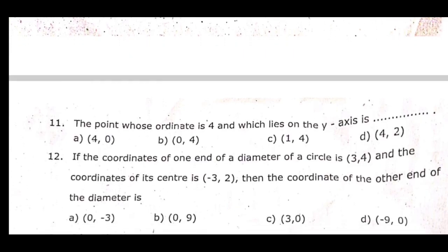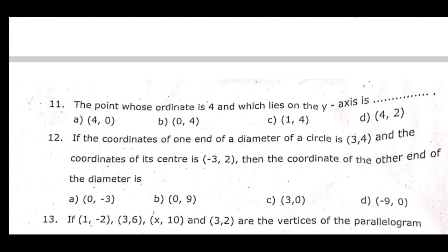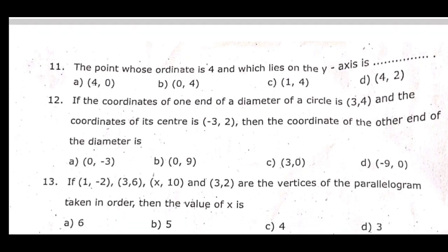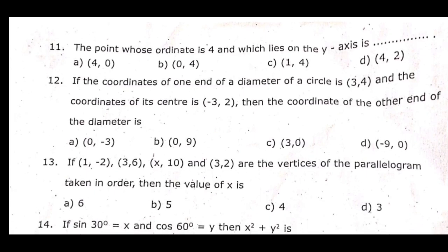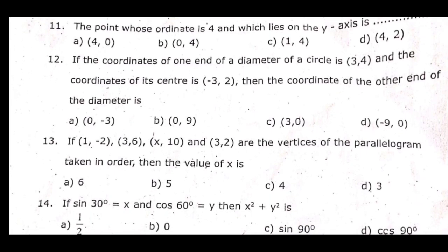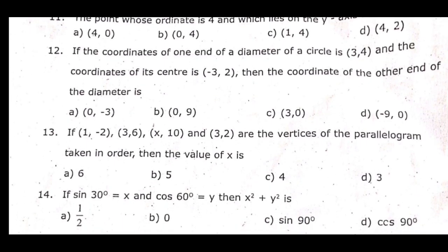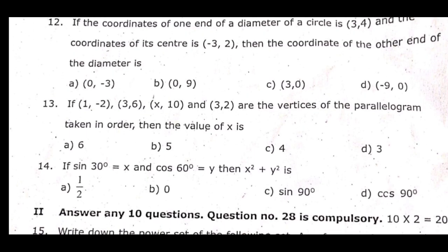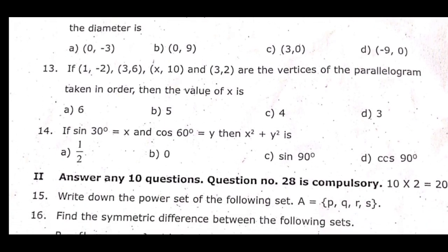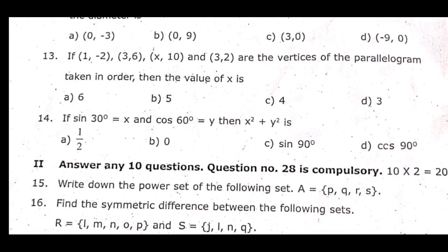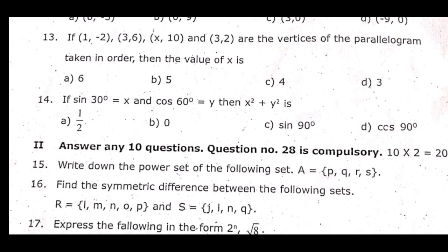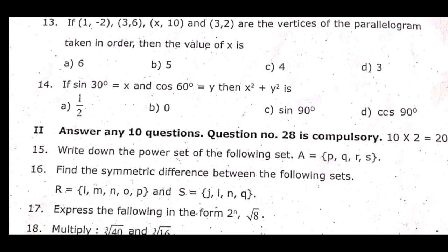Eleventh one: The point whose ordinate is 4 and which lies on the y-axis is dash. Twelfth one: If the coordinates of one end of a diameter of a circle is (3, 4) and the coordinates of its center is (3, 2), then the coordinate of the other end of the diameter is dash. Thirteenth one: (1, -2), (3, 6), (3, 10), (3, 2) are the vertices of the parallelogram taken in order, then the value of x is dash.